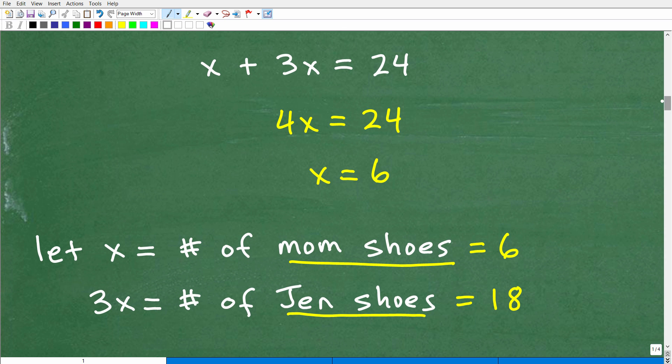Okay, so we have X plus 3X is equal to 24. So what do we need to do? Well, X and 3X, we need to combine like terms. That's 4X. So 4X is equal to 24.